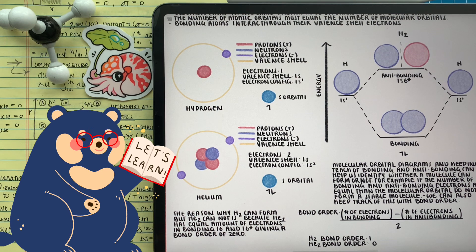To kind of summarize what we were talking about with helium, if the same number of electrons are in bonding molecular orbitals as in anti-bonding molecular orbitals, then the molecule does not form.